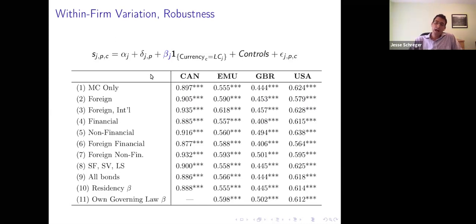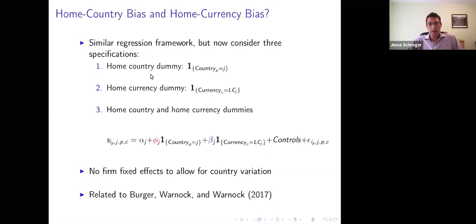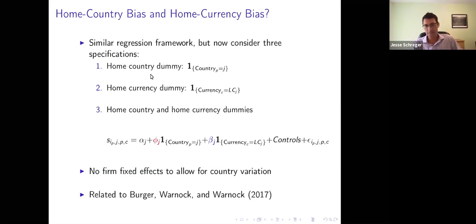We then turn to ask: I began by talking about how home country bias explains how much investors are overweight securities of their own firms. We want to ask how much of that can be explained by a home currency bias — how much can currency explain relative to country? We run a similar regression framework with three different specifications: how much of a security do investors own if it's issued by a firm in the investor's country; if it's issued in the investor's home currency; and if there's both a home country and home currency effect — what actually explains the variation?